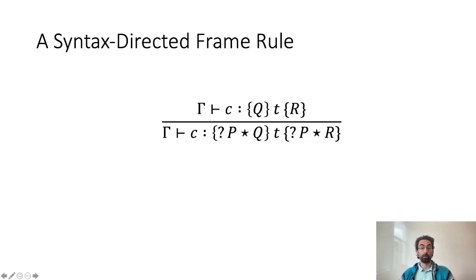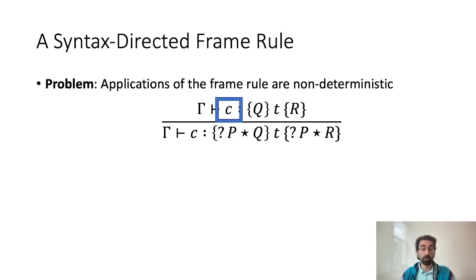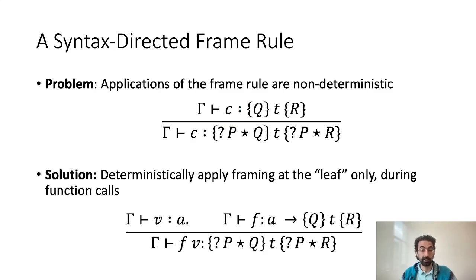One of the first problems we encountered is related to the frame rule at the core of separation logic reasoning. This rule states that given a separation logic Hoare triple on the premise, we can always add a frame P as long as it is separated or starred from the specification in the triple. But unfortunately, applications of this rule are non-deterministic. It can be applied to any command C, creating each time a new frame P that needs to be inferred, as symbolized by the question mark. When doing interactive verification that's fine, as the programmer can apply this rule when needed and instantiate the frame manually. But for semi-automated verification that's more problematic, so we need to make this rule deterministic. The way we do it is by making it syntax-directed, applying it exclusively at function calls.